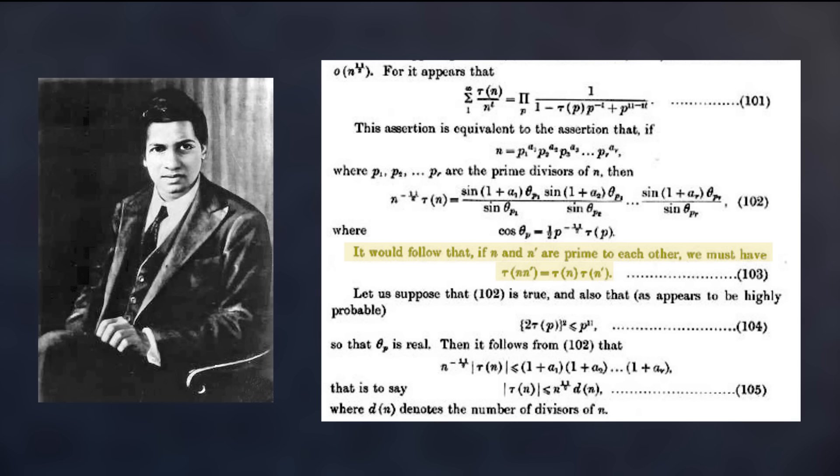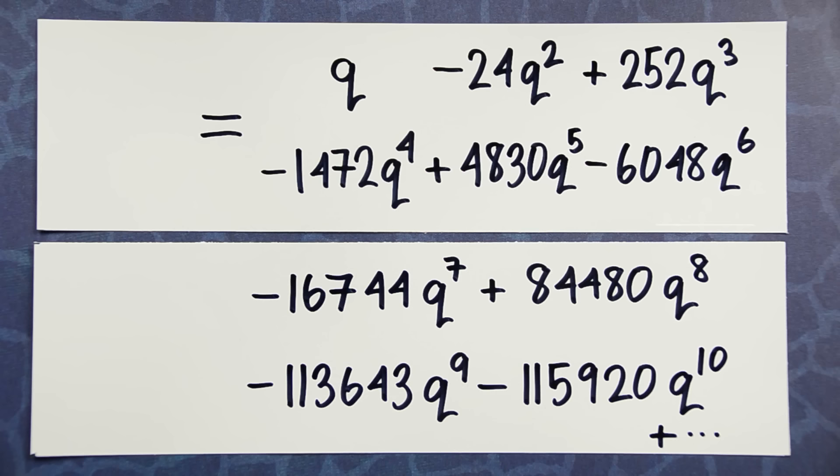Ramanujan himself didn't know how to prove this, and he conjectured it in what is now a very famous 1916 paper. What we now know is that Ramanujan's identity is reflective of the fact that these are no ordinary numbers. They actually contain some very deep meaning.